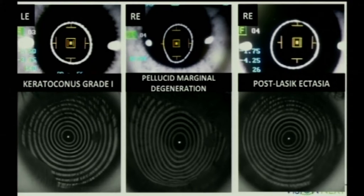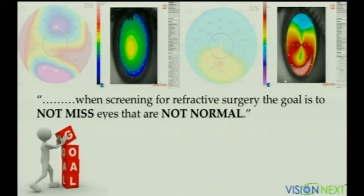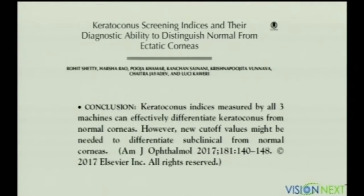When the cornea is grossly pathological, any diagnostic modality including the simplest can diagnose it. But when we are screening for refractive surgery, the goal is to not miss any eye that is not normal. For this it is important that of all currently available topography machines, the Scheimpflug tomography ones have the best diagnostic ability.